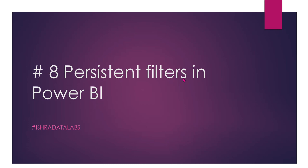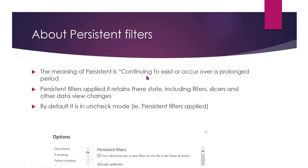So the meaning of persistent is continuing to exist or occur over a prolonged period. It means something that stays for a long time. For example, saving data — like databases, tables, and values that are saved — that is called persistent. Data in a database is a persistent one.